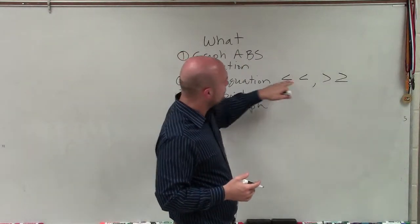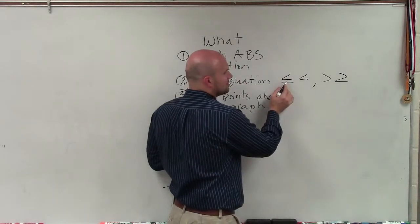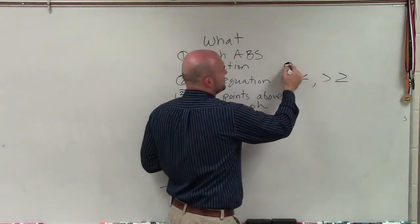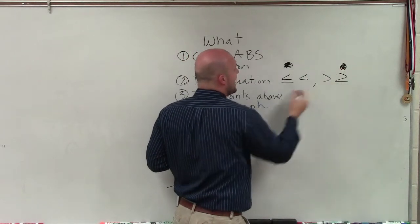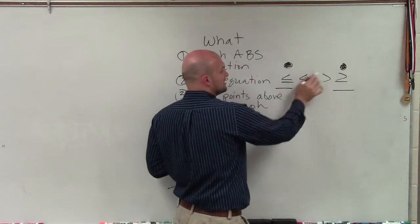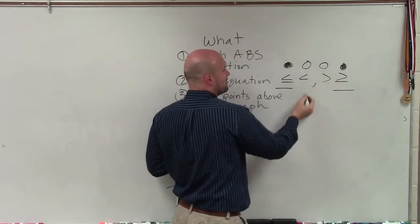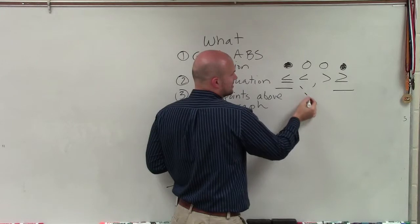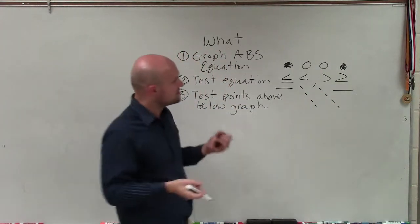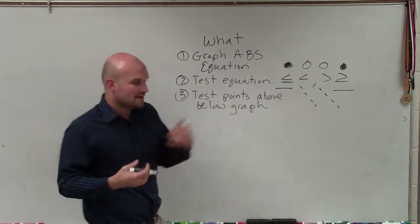...had what we call closed points, right? Those are going to produce solid lines for us, whereas when we had less than or greater than, those were open points, and those are going to produce dashed lines. This is important for testing the equation.